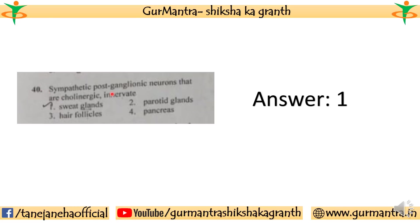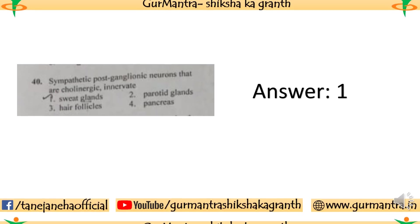Question 40: Sympathetic postganglionic neurons that are cholinergic innervate which organ? The correct answer is sweat glands — the first option is the correct answer.